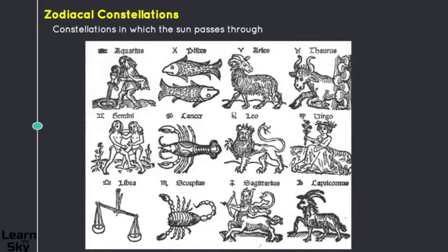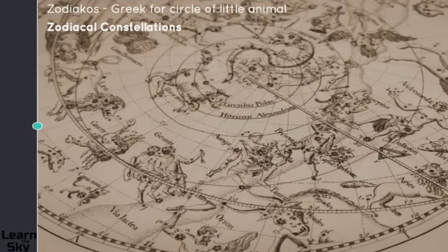To review, we have Aquarius, Pisces, Aries, Taurus, Gemini, Cancer, Leo, Virgo, Libra, Scorpius, Sagittarius, and Capricornus. These are all seen during different parts of the year. They could also be considered somewhat seasonal constellations, but they are named zodiacal because these are the ones that the sun takes a path through.